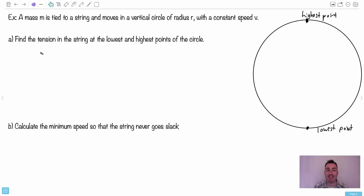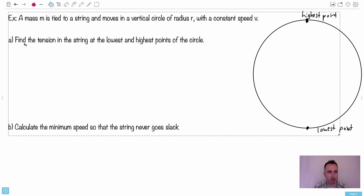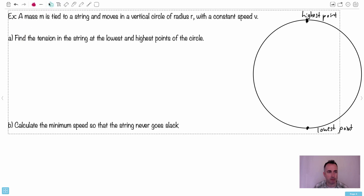The question is find the tension in the string at the lowest and highest points of the circle. I've labeled them so we've got highest point and lowest point here. Maybe let's do the lowest point. We'll start with that one. So lowest. What happens at the lowest point here?